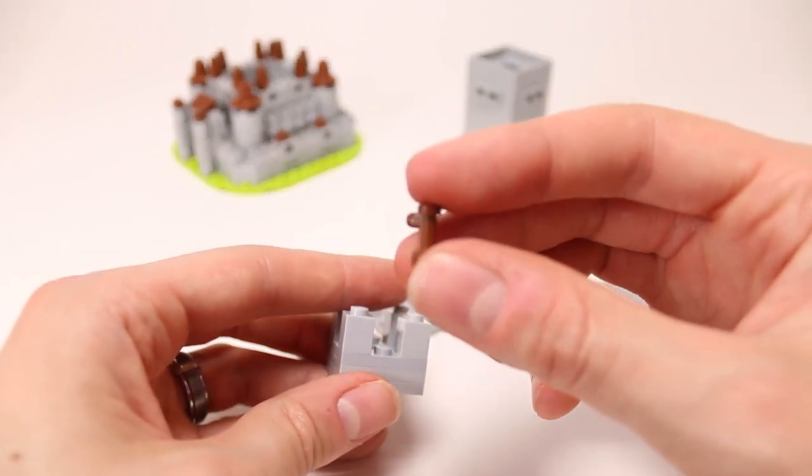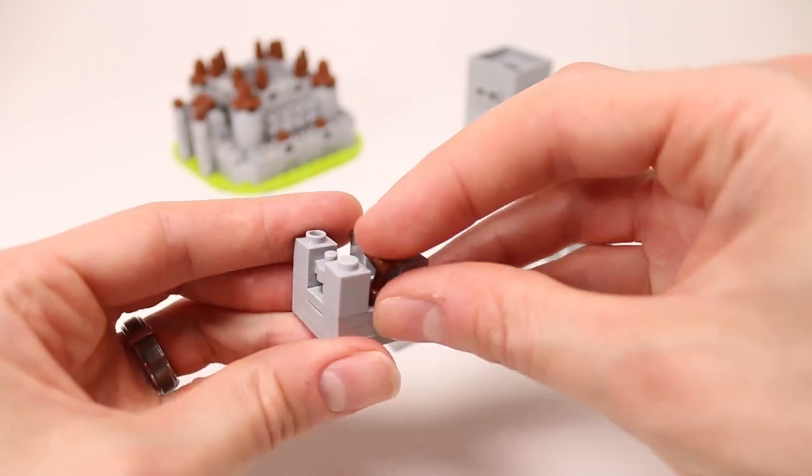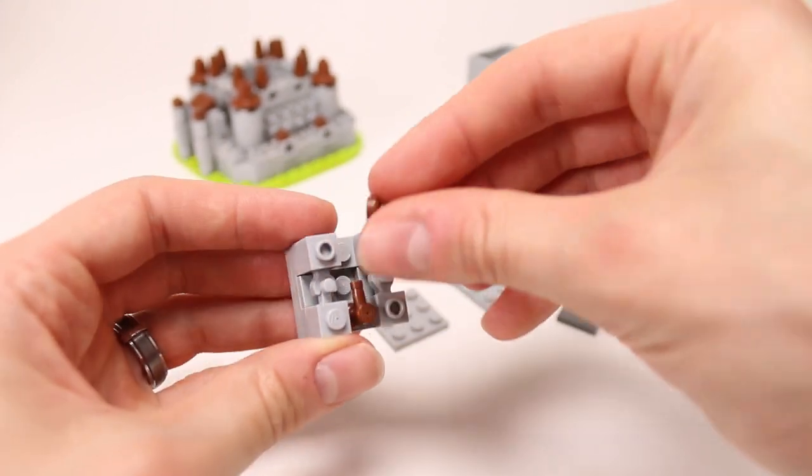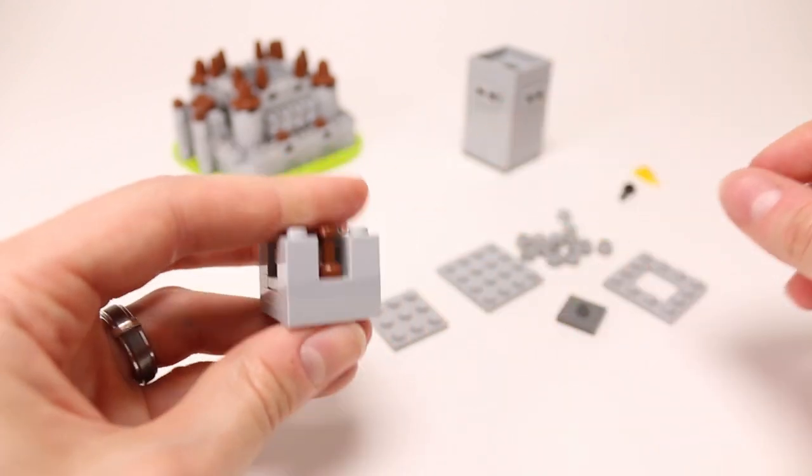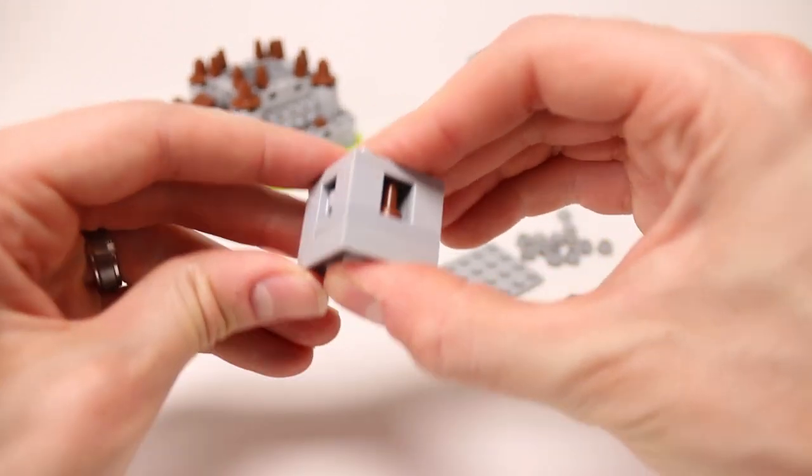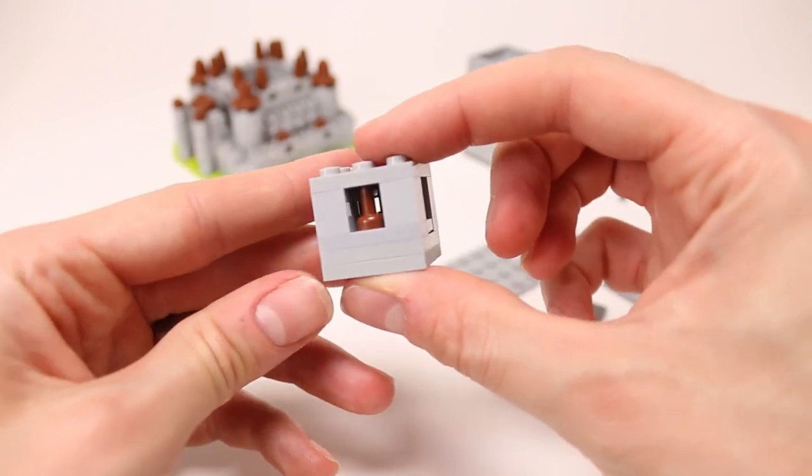I'm going to use these tap pieces in these spaces here. And this will create kind of like a little window pane look in the middle. Hopefully that will have a nice castle-y look to it.